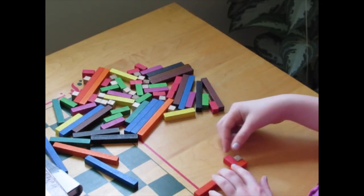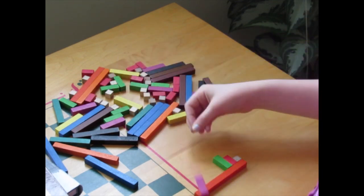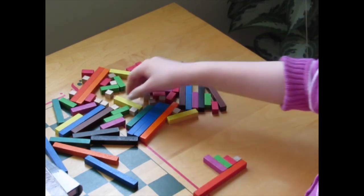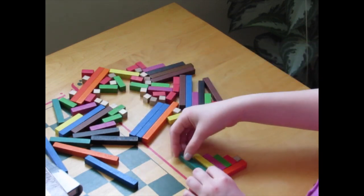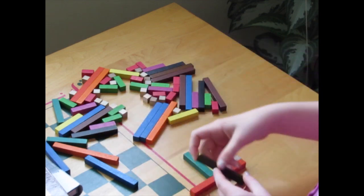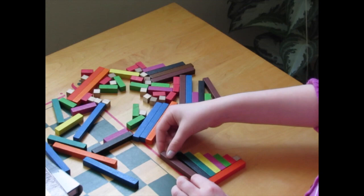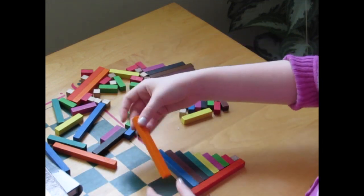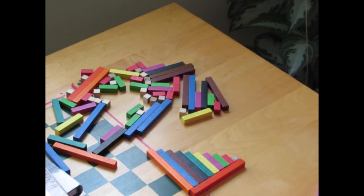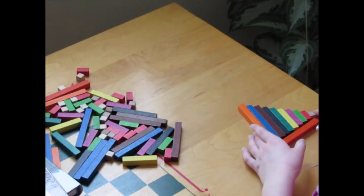First we will arrange the Cuisenaire rods 1 to 10 in order to see which numbers correspond to which colors. 3 is green, 4 is purple, 5 is yellow, 6 is dark green, 7 is black, 8 is brown, 9 is blue, and orange is 10. We notice that we put a 10 rod on the bottom in order to keep them straight. Now we'll put them off to the side so we have them to refer to later.